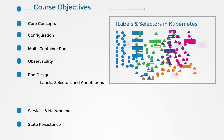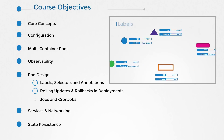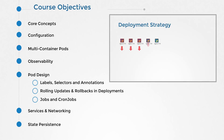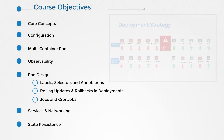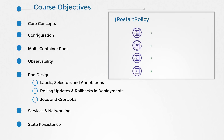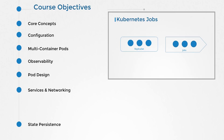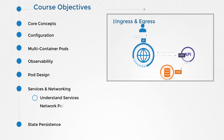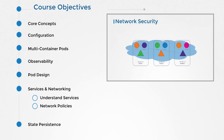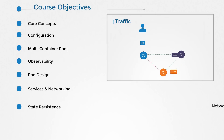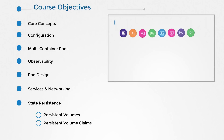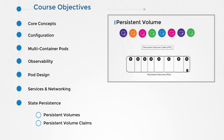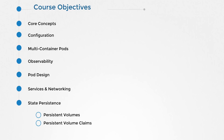We then move on to labels and selectors, and then rolling updates and rollbacks in deployments. We will learn about why you need jobs and cron jobs and how to schedule them. We will then learn about services and network policies. And finally, we look at persistent volumes and claims. For all of these topics, we have lectures that make these complex topics easy to understand, followed by coding challenges where you will be practicing what you learned on a real, live environment.